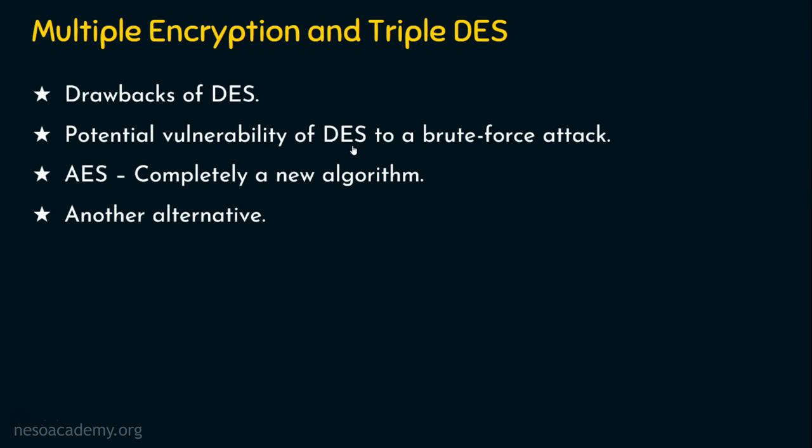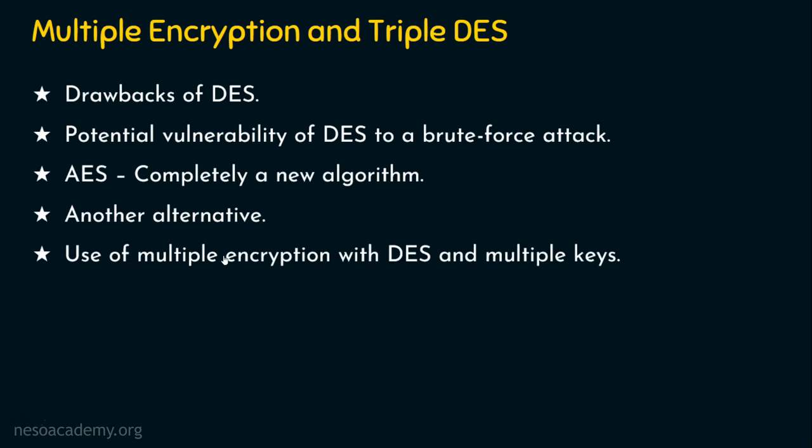An attempt at making DES more powerful is the use of multiple encryption with DES and with multiple keys. Say you have the DES algorithm — instead of using the DES algorithm only one time for generating the ciphertext, if we go for multiple-time encryption, we assume that this multiple encryption will be more powerful. If you do encryption two times, then it is double DES. We will also focus on triple DES. Multiple encryption is introduced on DES just to enhance the security.